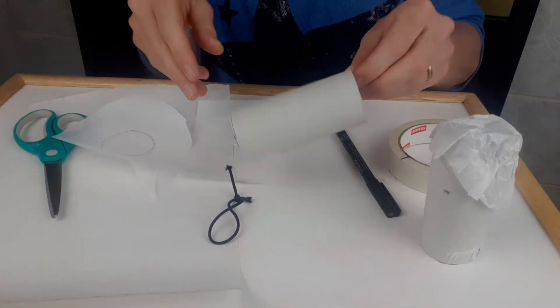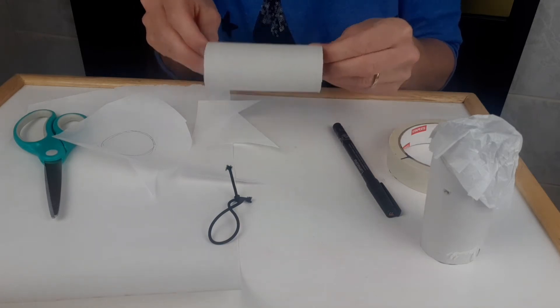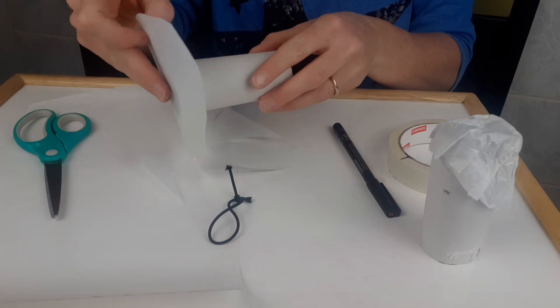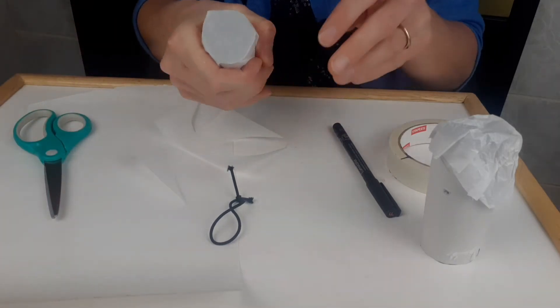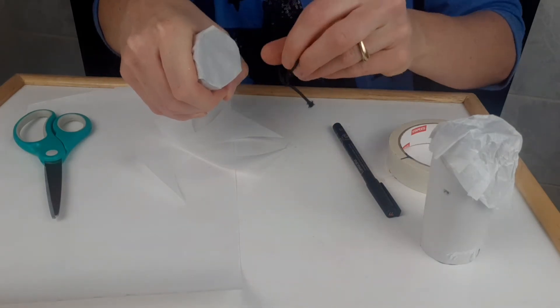If you want, you can decorate your toilet paper tube first using markers, paint, or stickers. Once you're ready to assemble your kazoo, simply put your paper on the top, fold it down, and then tightly secure the elastic around the top.